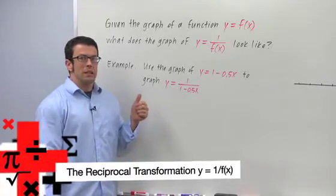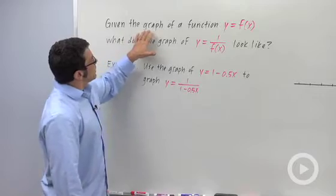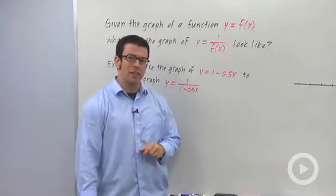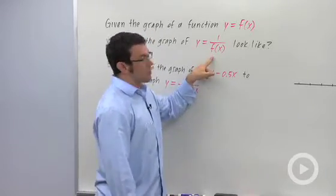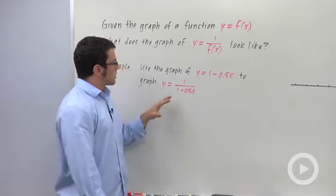I want to take a look at a particular transformation called the reciprocal transformation. Given the graph of a function y equals f of x, what does the graph of y equals 1 over f of x look like? To figure that out, I want to start with a simple example.